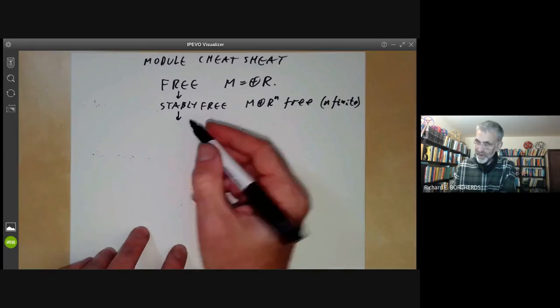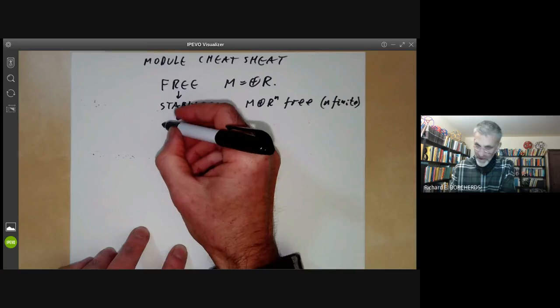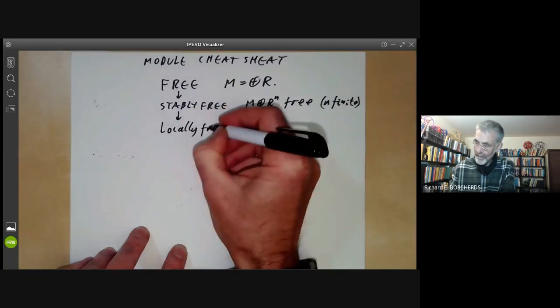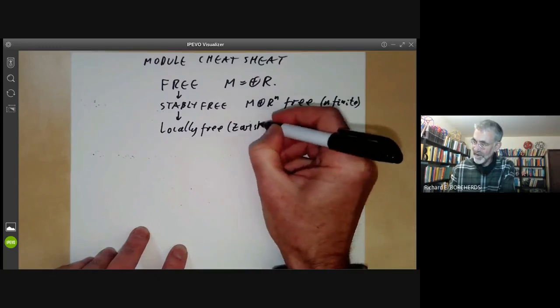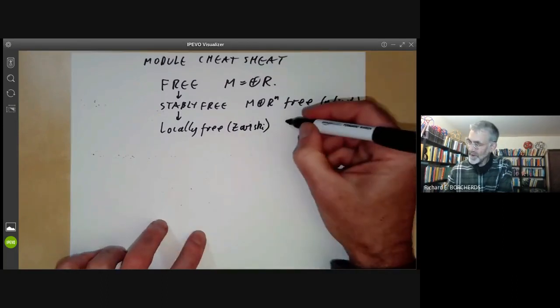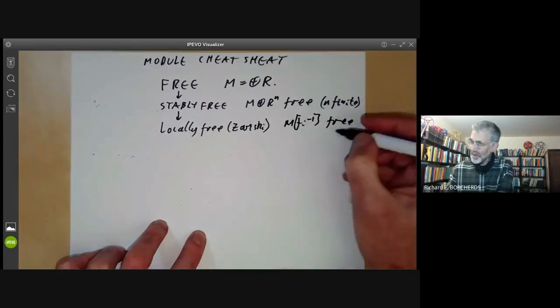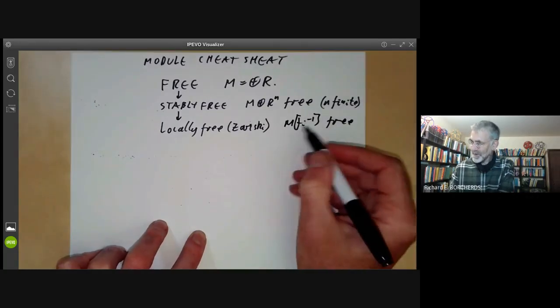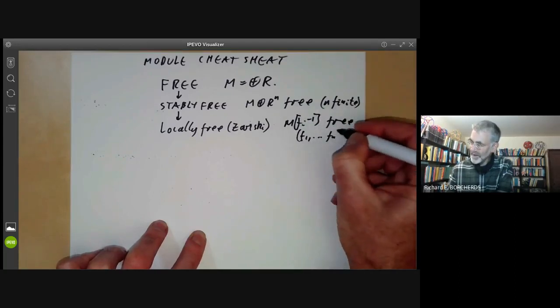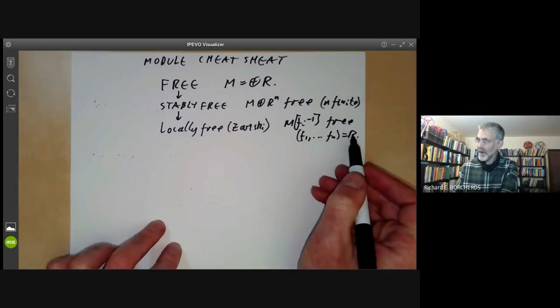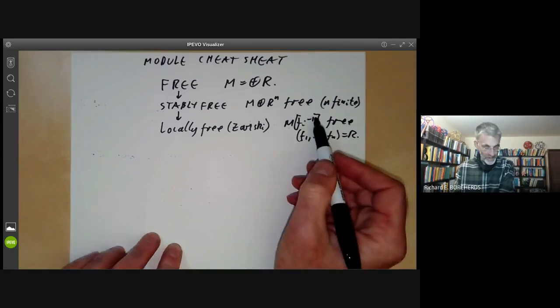Next, we can have modules that correspond to vector bundles, which are locally free modules. And it turns out there are two slightly different concepts of locally free modules. So these are locally free in the Zariski topology. And what this means is that M_Fi to the minus one is free over the localization of R at some element F_i, where the ideal generated by the elements F_1 up to F_N is just R. So informally, the spectrum of R is covered by a finite number of open sets. And over each of these open sets, the module looks free.